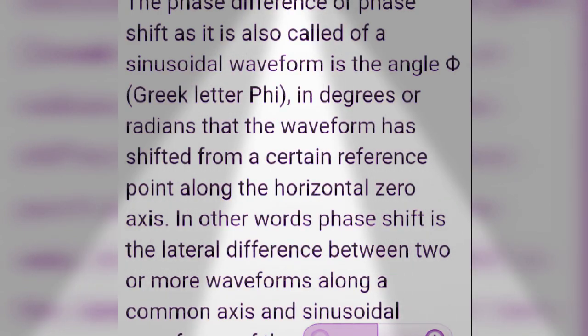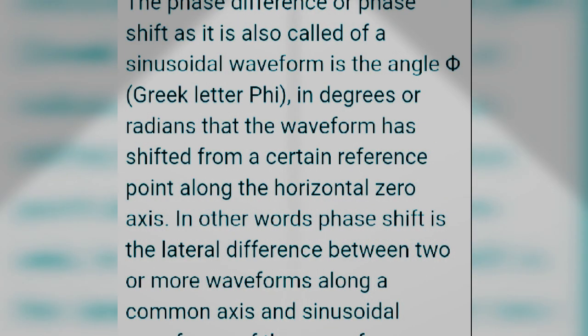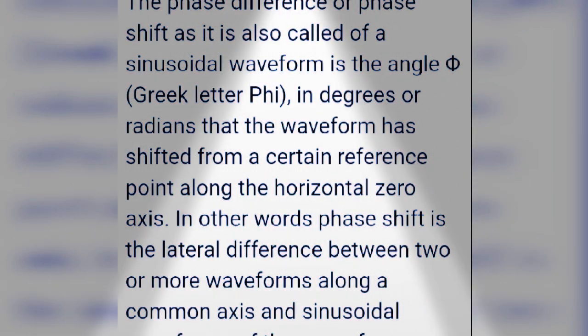The phase difference, or phase shift, of a sinusoidal waveform is an angle theta (the Greek letter φ or θ) in degrees or radians that the waveform has shifted from a certain reference point along the horizontal zero axis.